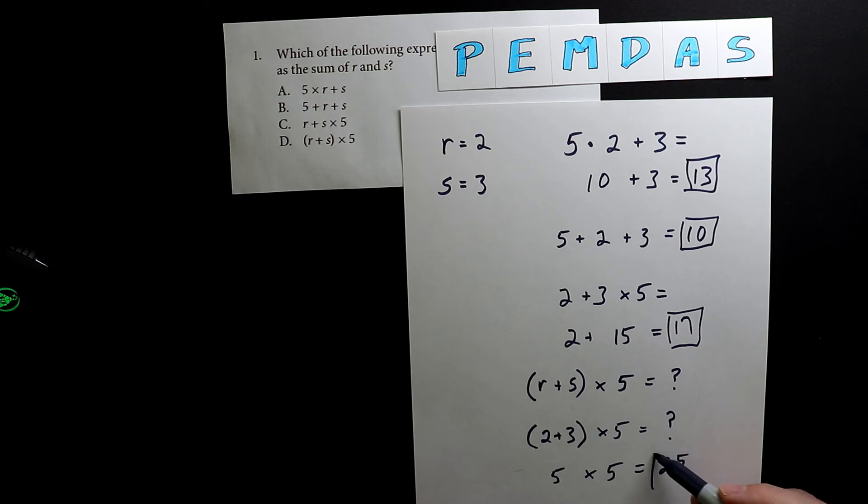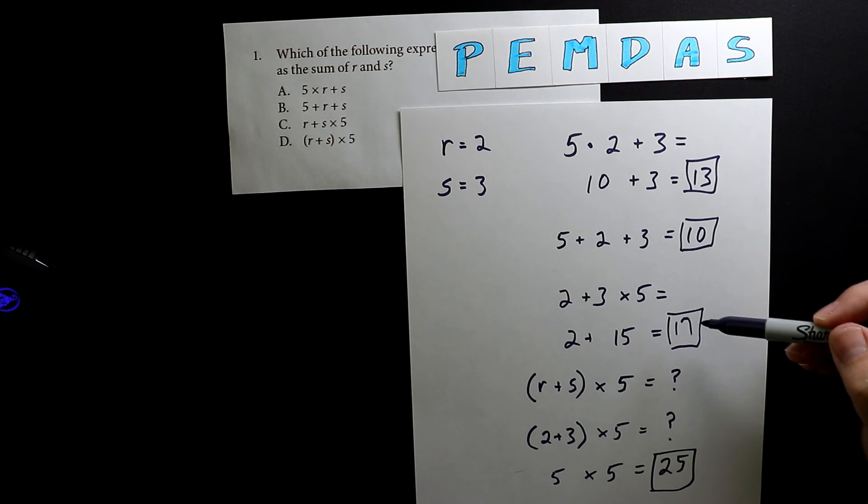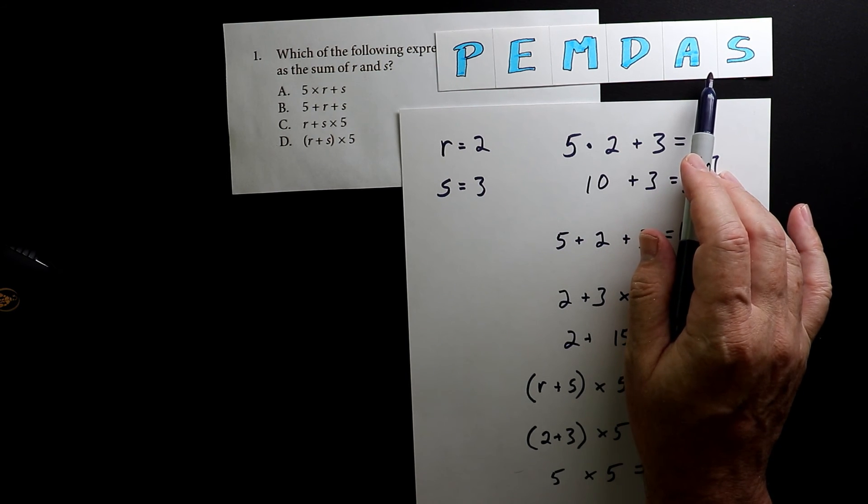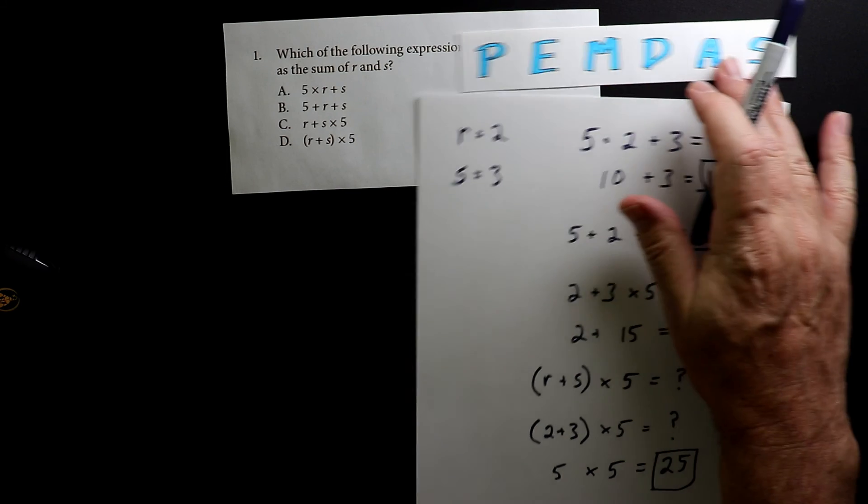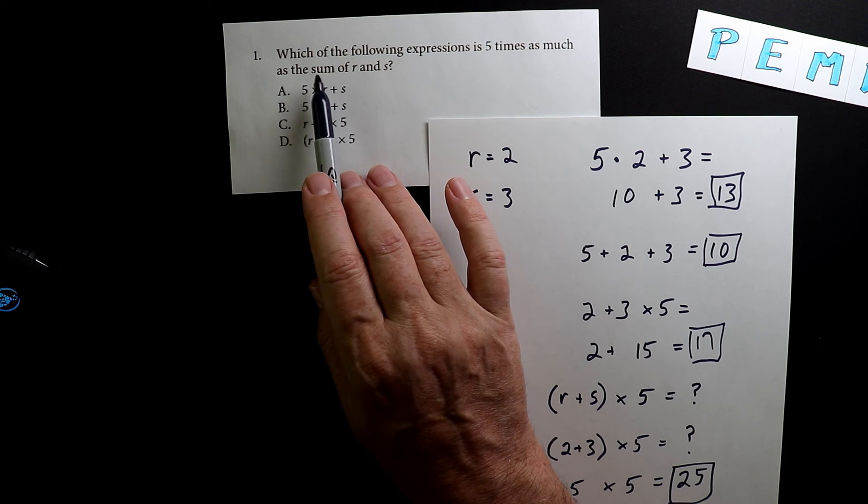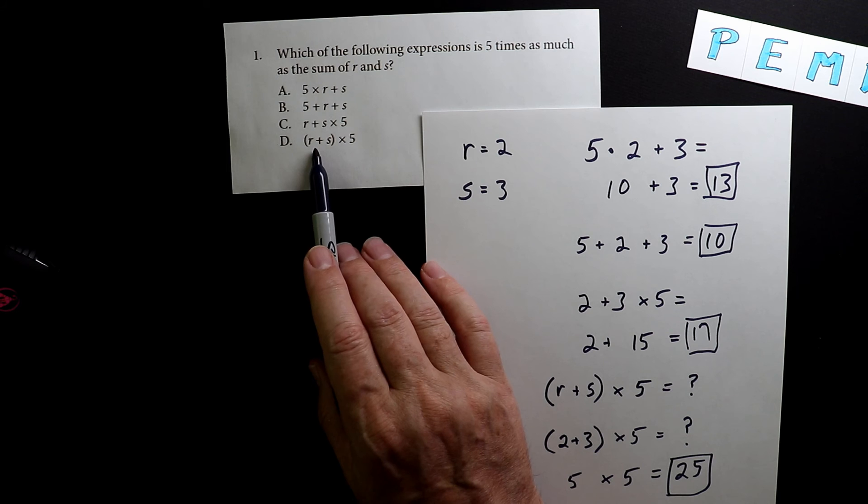This is where you have to really focus. Every one of these answers is different: 13, 10, 17, 25. That's why you have to use the order of operations. In the original problem, they use the expression the sum of r and s. They group these things together, and this is the only one where they're grouped together.